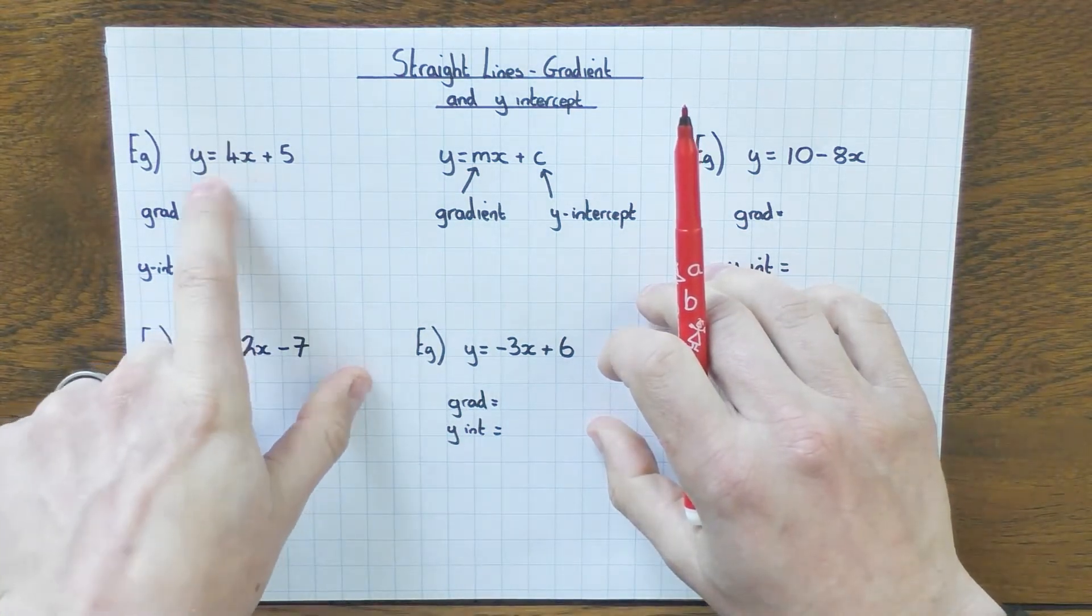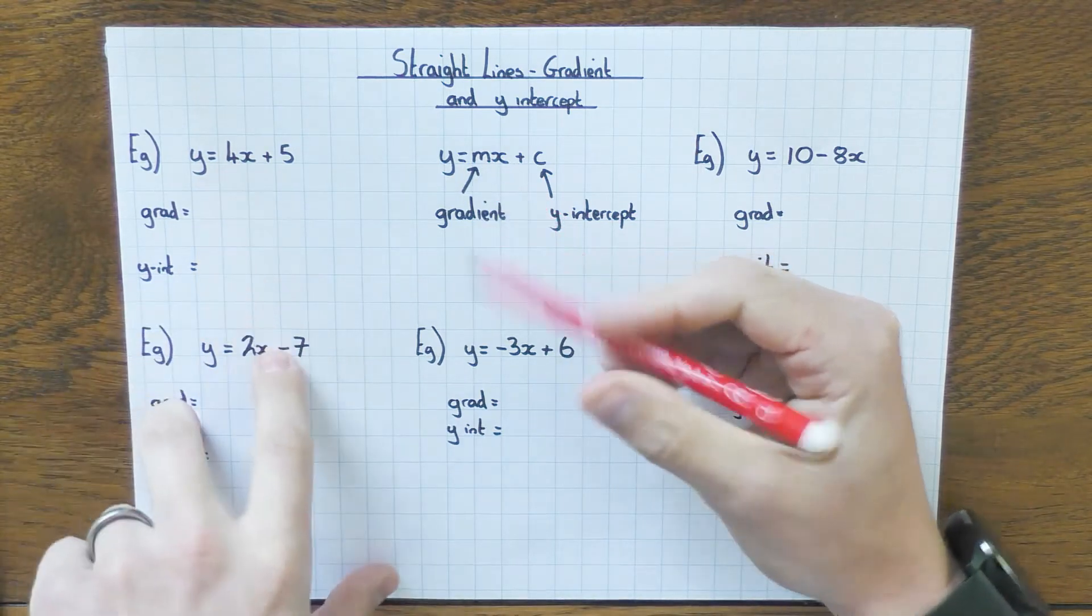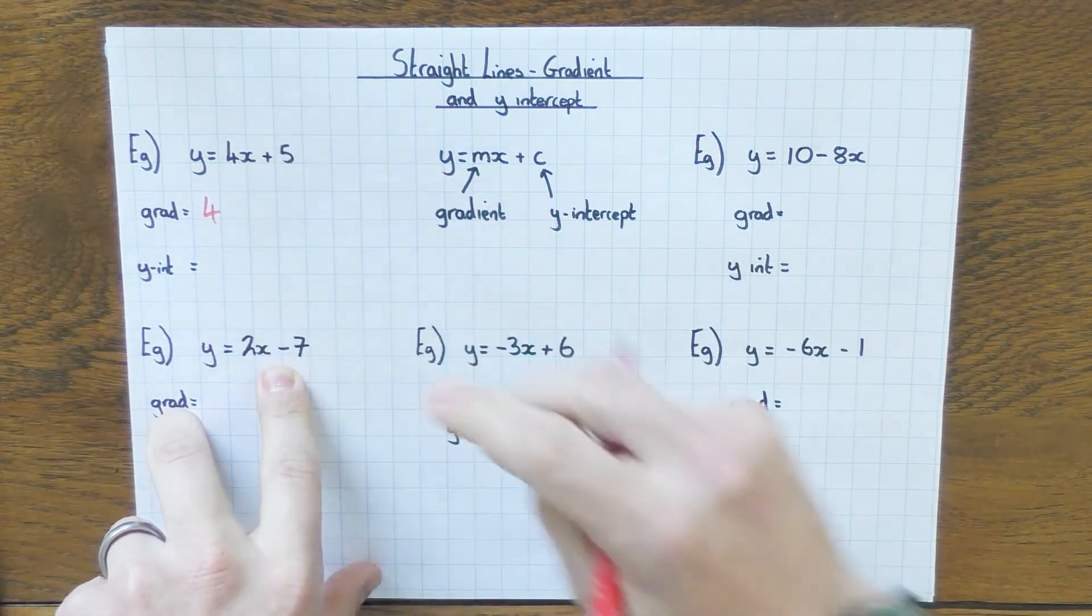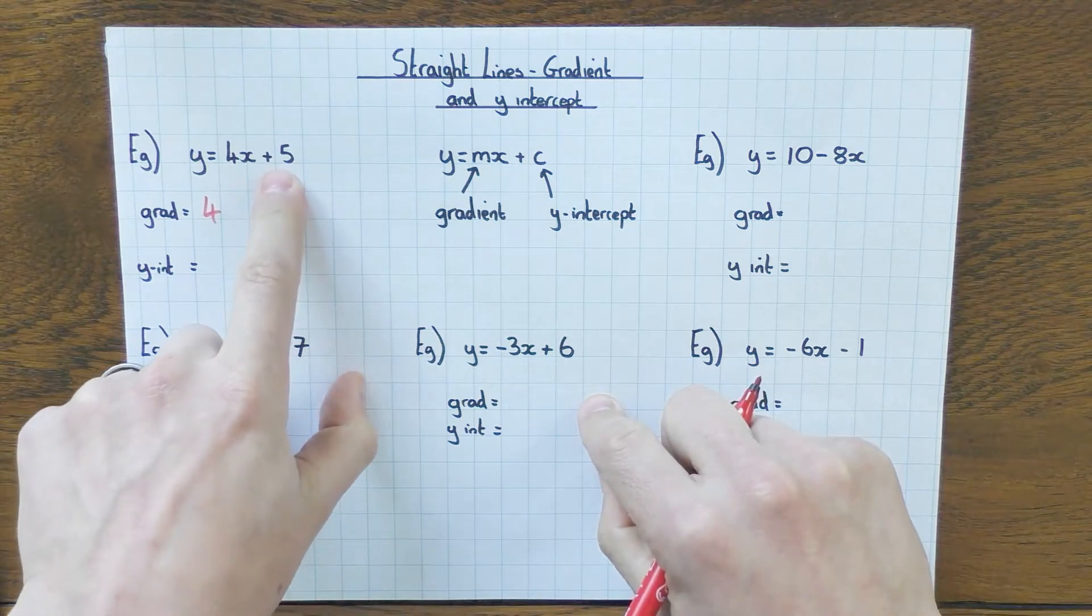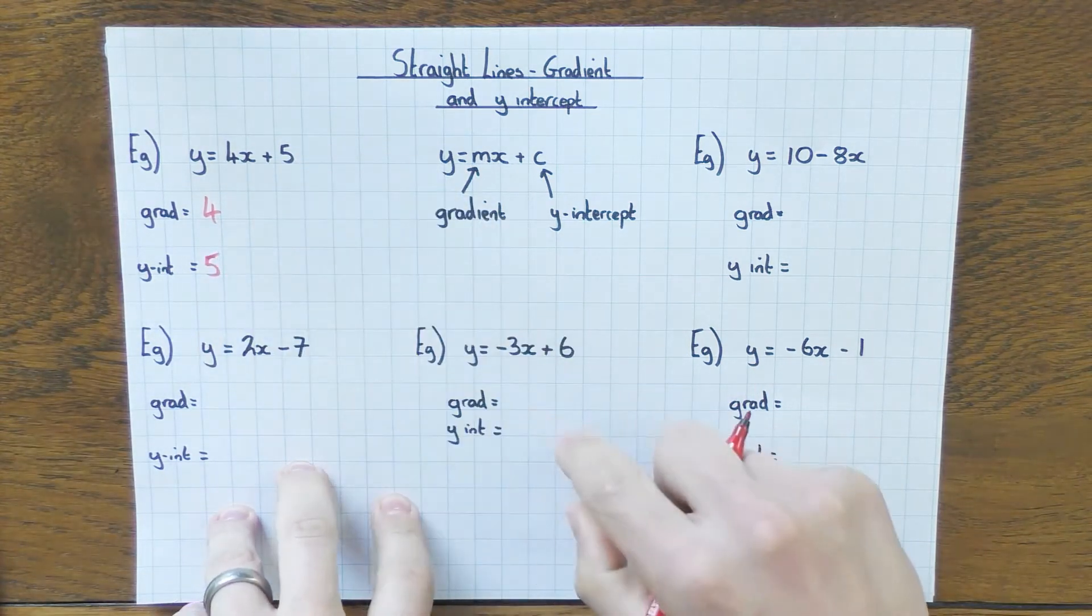So here's my first equation of a straight line: y equals 4x plus 5. What's the gradient? Well, it's just the number that's in front of x, so the gradient here is 4, nice and easy. What's the y-intercept? Well, that's plus 5, so the y-intercept is just 5. Done.